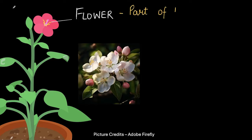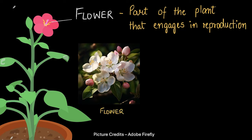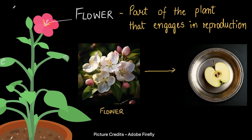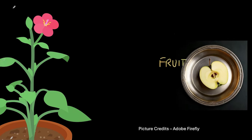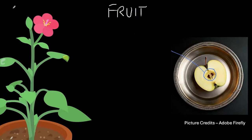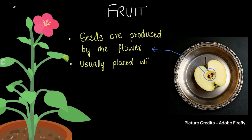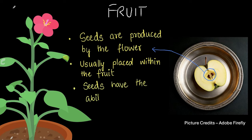The flower is the part of the plant that engages in reproduction. The flower usually turns into a fruit — parts of the flower turn into the fruit, and it's within the fruit that the secret to reproduction lies. It's the seeds. The seeds inside the fruit are responsible for reproduction, and they are produced by the flower and usually placed within the fruit. Seeds have the ability to make a new plant — when a seed is planted in the ground, it slowly germinates and starts giving a root and a shoot, and it becomes a plant.